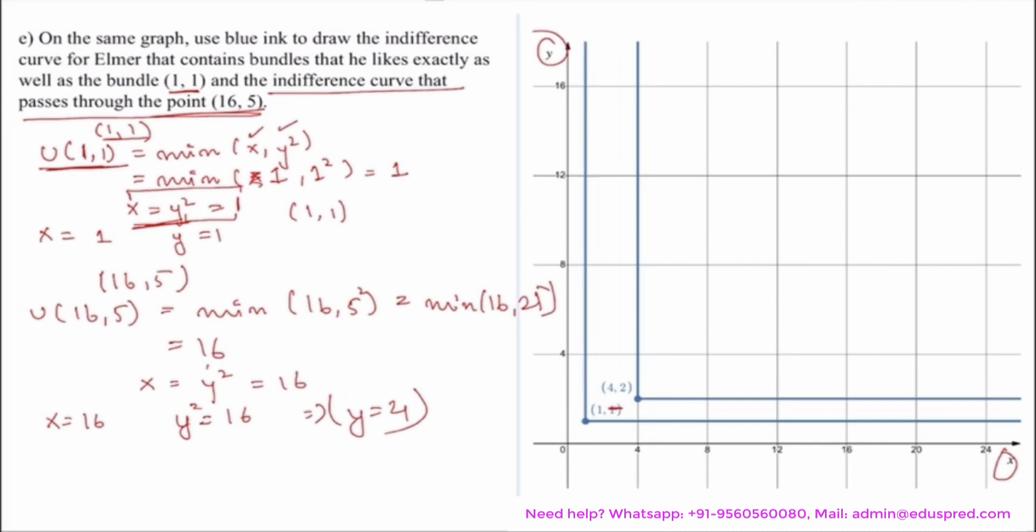So your intersection point becomes (16,4) and not (16,5). Though the utility from both the points would be the same, your kink point is now (16,4). So do not just blindly plot the point (16,5) and draw parallel lines through it. That would not be the case. So be very careful of that.